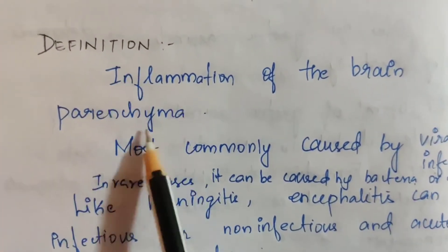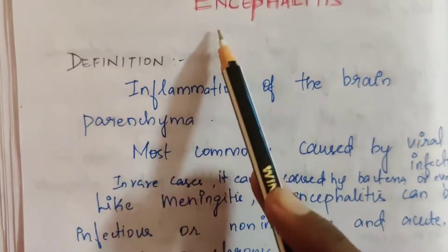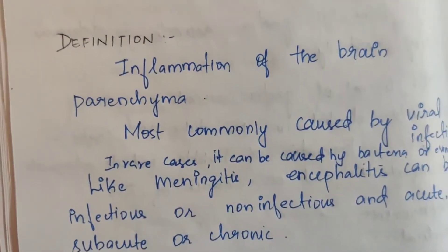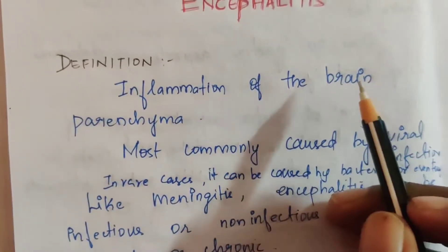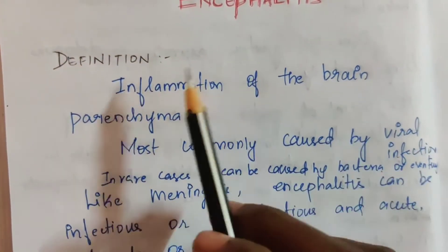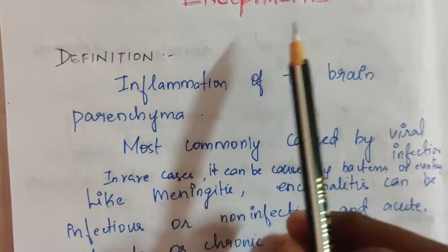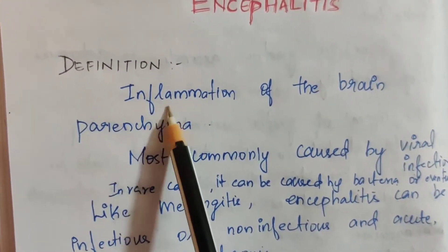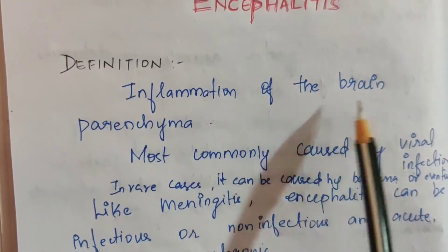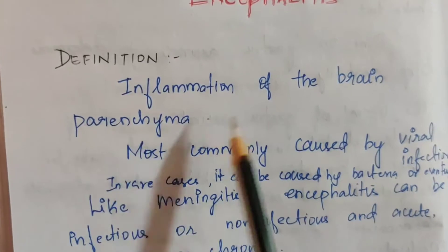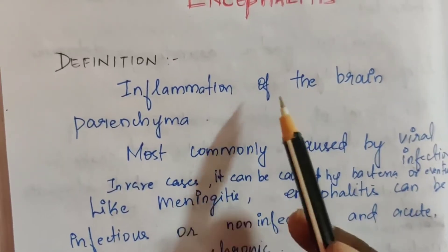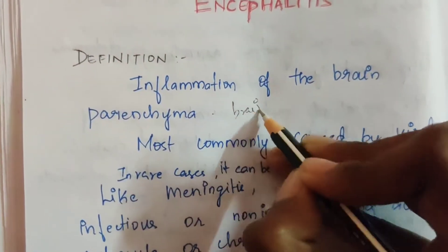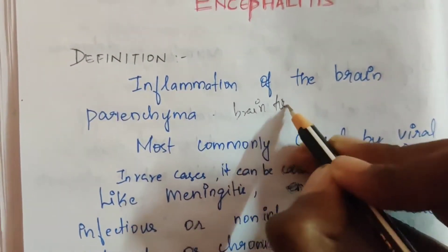First, the definition. Encephalitis is a very rare but serious condition, so it should be treated properly. It is the inflammation of the brain parenchyma — inflammation of the brain tissues.